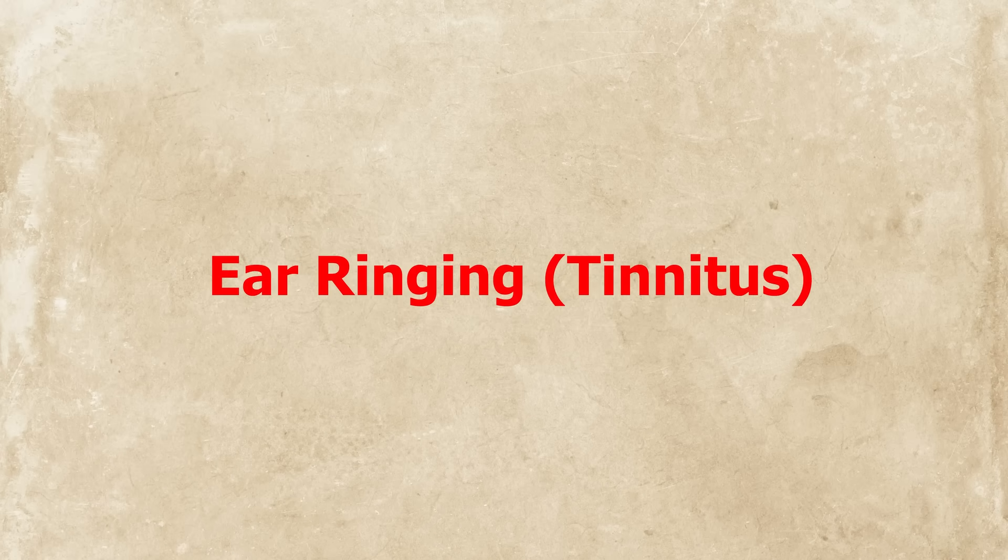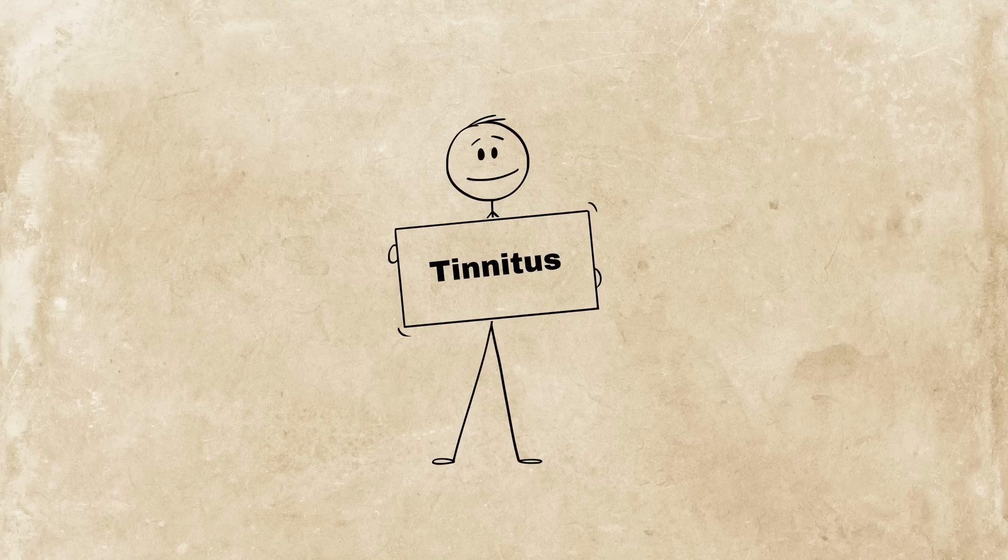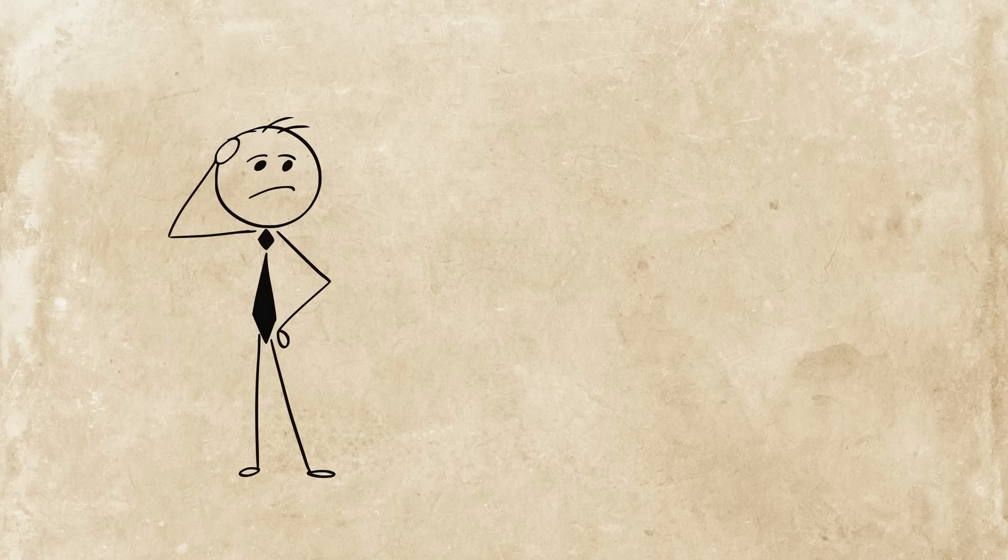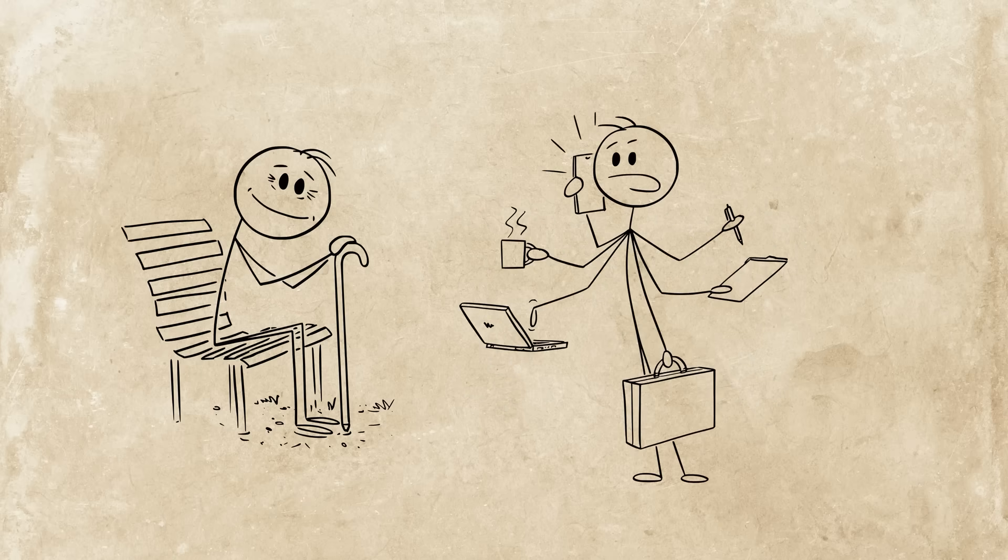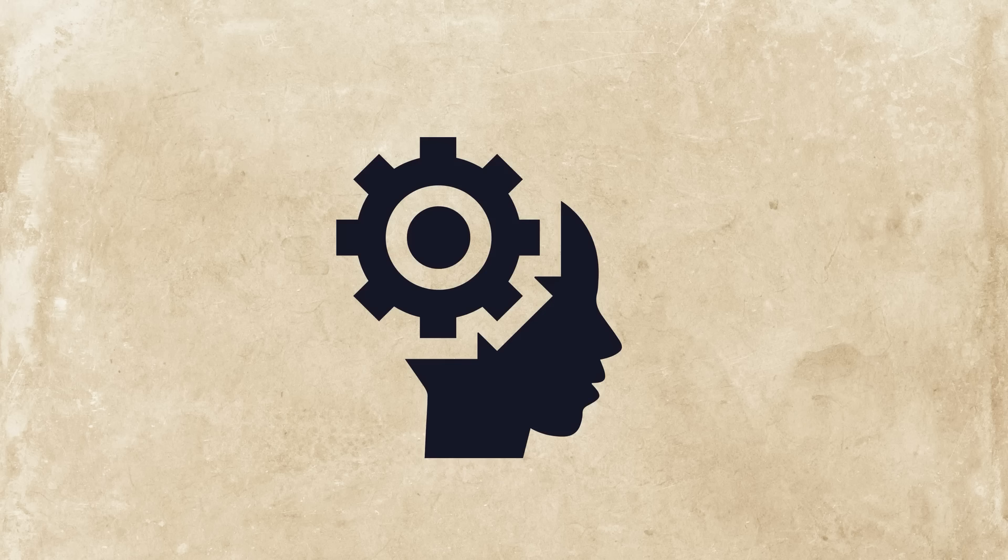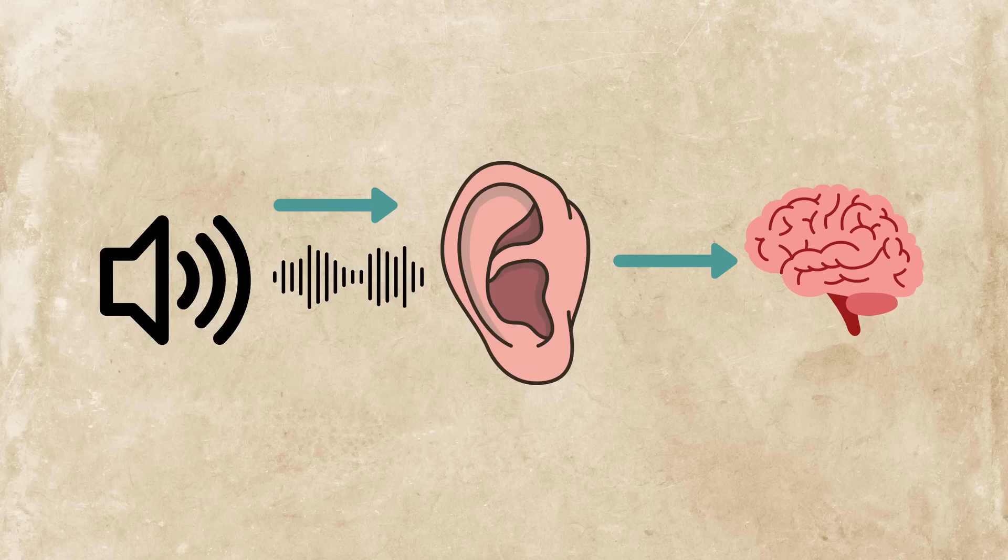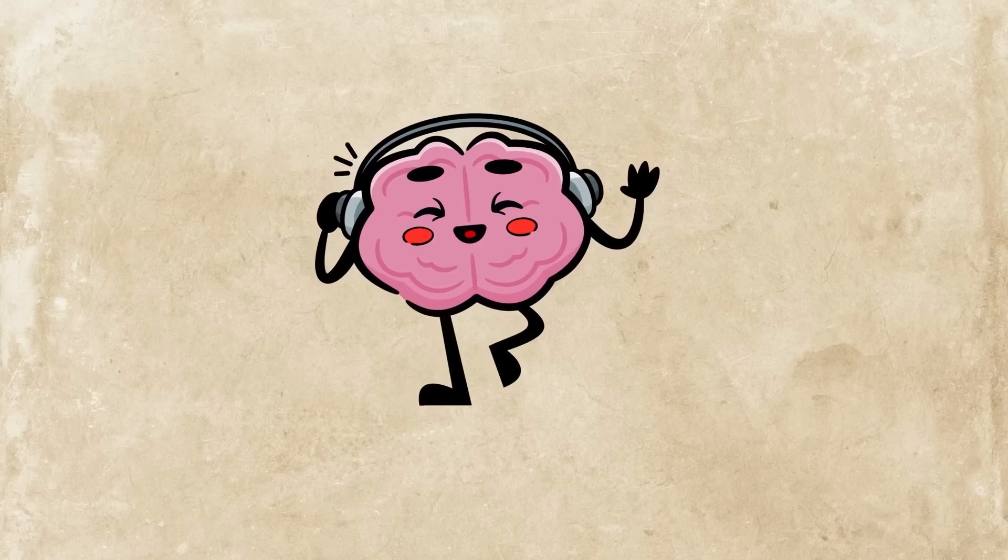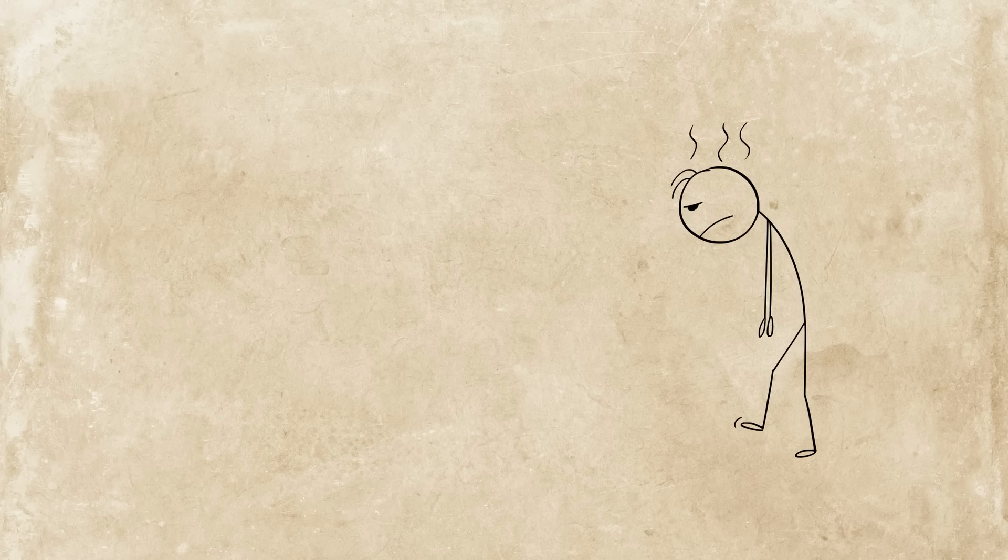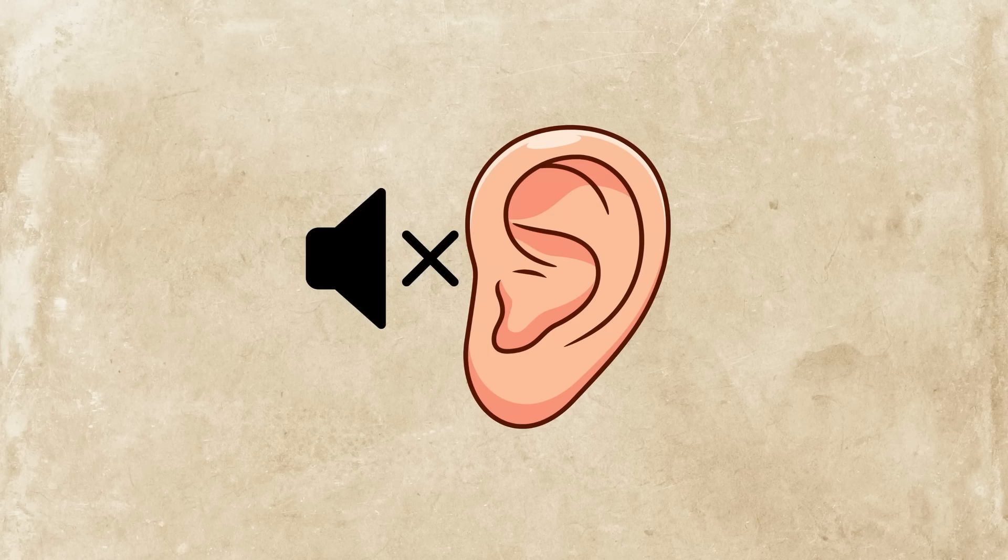Ear ringing, or tinnitus. Ever hear a high-pitched tone in complete silence? That's tinnitus, often caused by exposure to loud noise, aging, or even stress. It's not sound from the environment. It's generated inside your brain. The auditory system fills in the blanks when it doesn't get normal input. Kind of like your brain refusing silence and playing its own track. It's one of the most frustrating glitches because it's hard to ignore, even though there's nothing actually there.